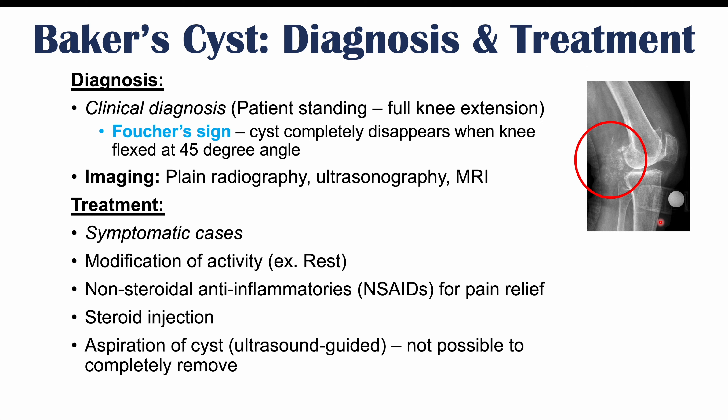A steroid injection may be used in some patients. In others, ultrasound-guided aspiration of the cyst can help reduce its size. It is usually not possible to completely remove all of the fluid, but aspiration can relieve knee tightness and discomfort. In very severe cases, surgery — specifically open cyst excision — may be employed.